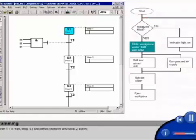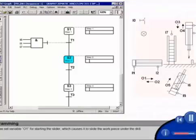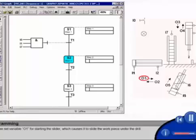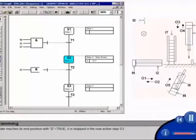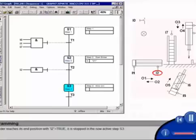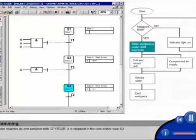If transition T1 is true, step S1 becomes inactive, and step 2 active. There we set variable O1 for starting the slider, which causes it to slide the workpiece under the drill. If the slider reaches its end position with I2 equals true, it is stopped in the now active step S3.